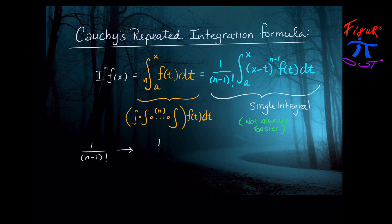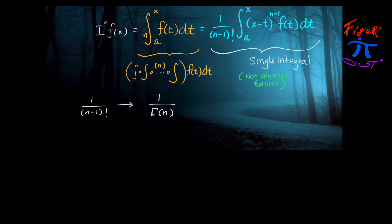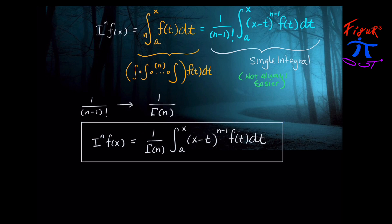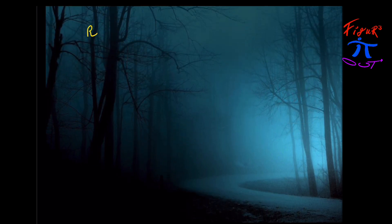Working toward fractional calculus, instead of using (n−1)-factorial we switch over to the gamma function, since gamma of n equals (n−1)-factorial. With this substitution, we now have 1 over gamma of n times the integral from a to x of (x−t) to the (n−1) power times f of t dt. This gets a new name: it's called the Riemann-Liouville fractional integral, and it works for any function f of t that we can plug into it.